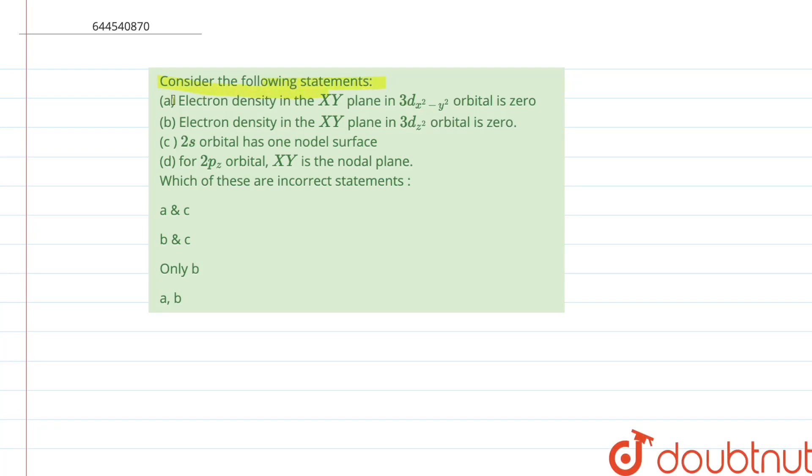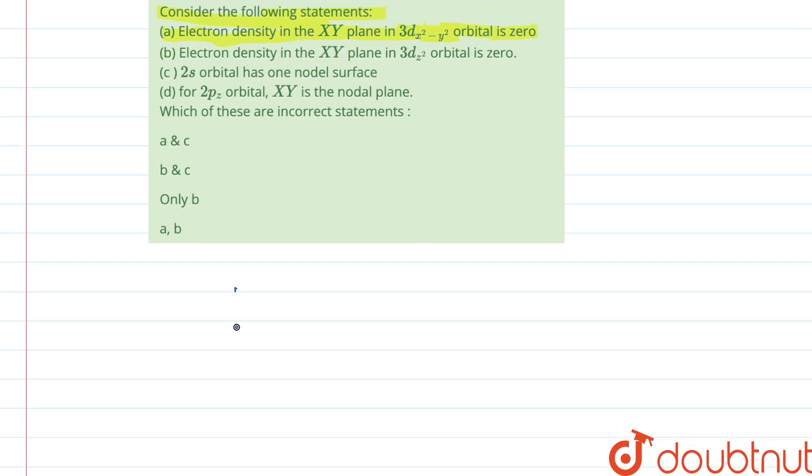Consider the following statements. The first one is that electron density in the xy plane in dx square minus y square orbital is zero. So if you look into the structure of dx square y square, if this is x and this is y axis,